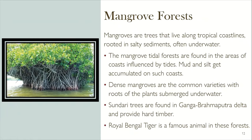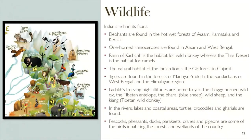Mangrove Forest: mangroves are trees that live along tropical coastlines, rooted in salty sediments often underwater. The mangrove tidal forests are found in coastal areas influenced by tides, where mud and silt accumulate. Dense mangroves are common, with roots of the plants submerged underwater. Sundari trees are found in the Ganga-Brahmaputra delta and provide hard timber. The Royal Bengal Tiger is a famous animal in these forests.